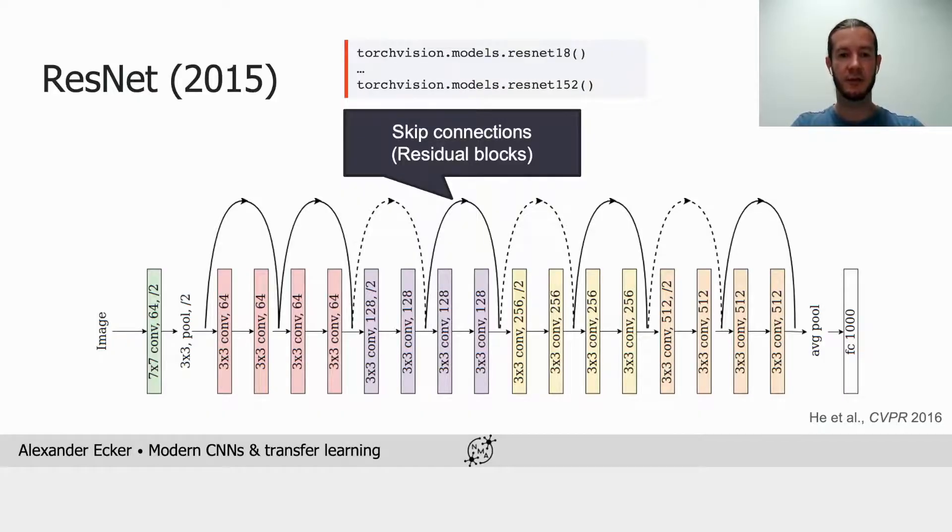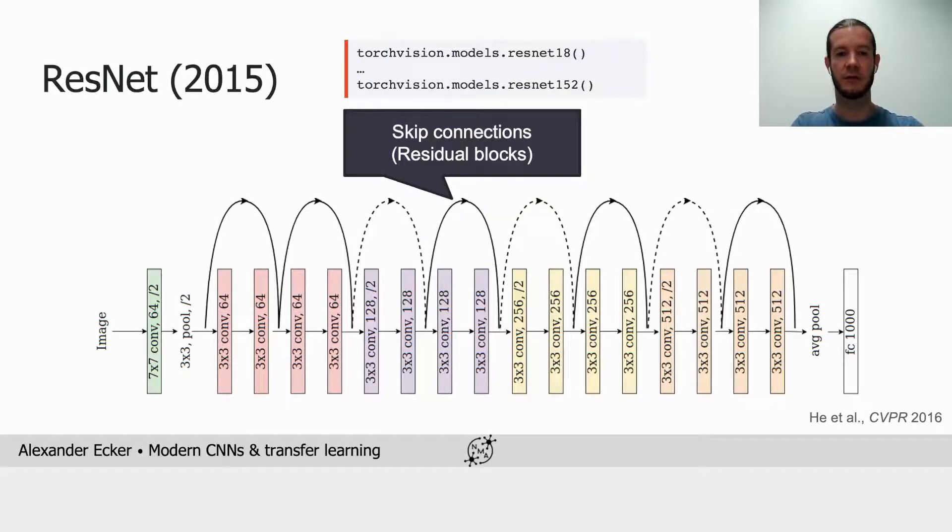Their main innovation was to use skip connections to create so-called residual blocks. The residual block looks as follows: we feed the input x through two convolutional layers to compute what's called f in the graph on the left. But then, instead of just stacking up more and more of those convolutional layers, we add the skip connection that takes the input to the block x and adds it to f of x. So the convolutional layers in the residual block are not transforming one feature representation into another, but rather they're computing the residual. That is, the difference between the input to the block and what the output of the block should be.